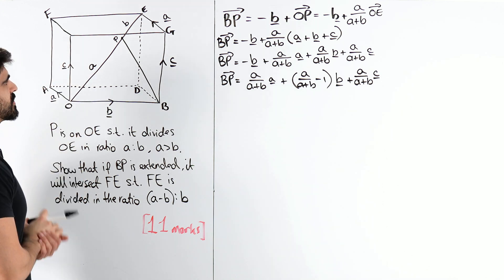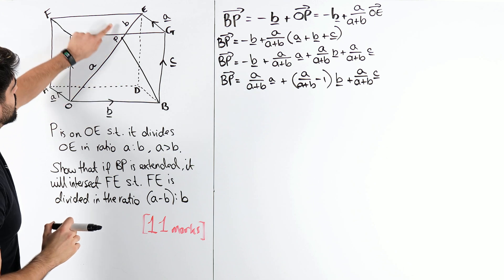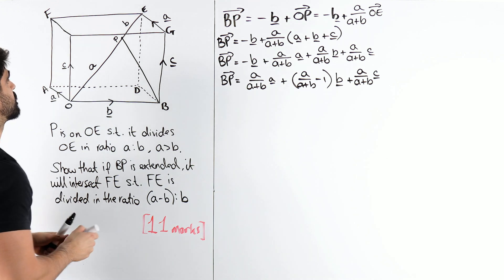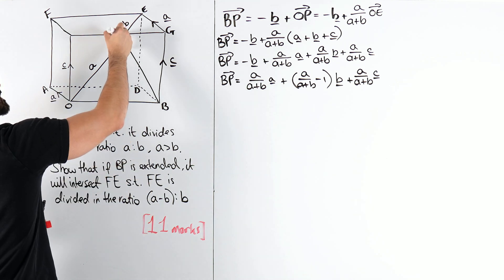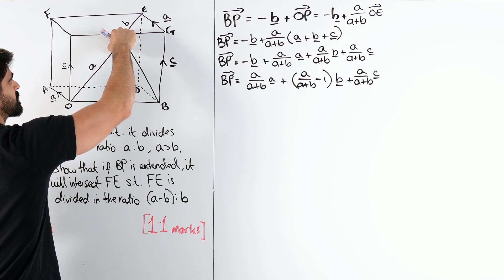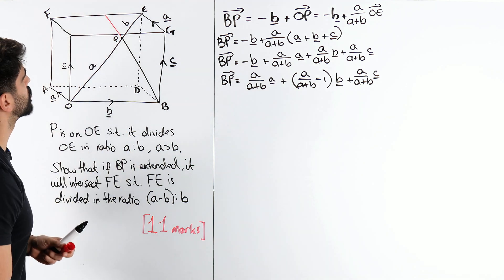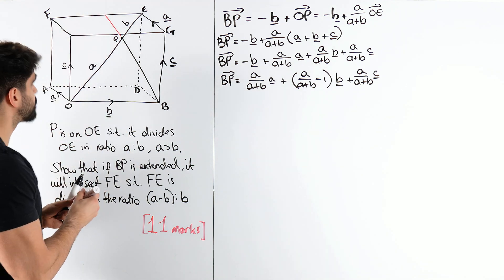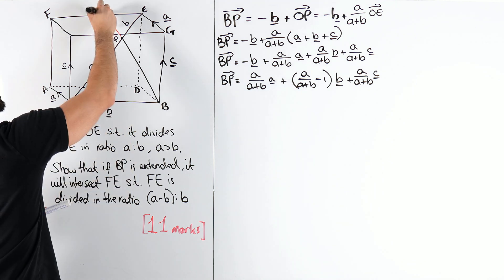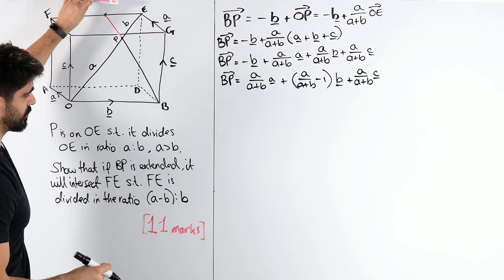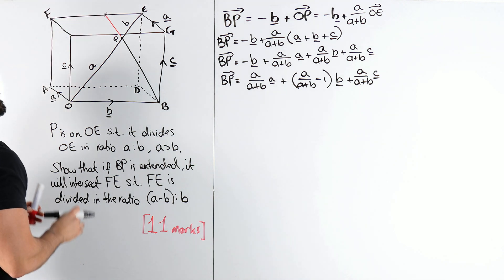Now, the question is saying, if you extend this line, yeah, if we extend this line, let me use a different colour pen. If we extend this, I'm also going to make a bit of space here, so I don't ruin my red pen. If we extend that, it is going to go towards FE, and we're trying to prove that it will split it in the ratio A minus B to B. Alright.